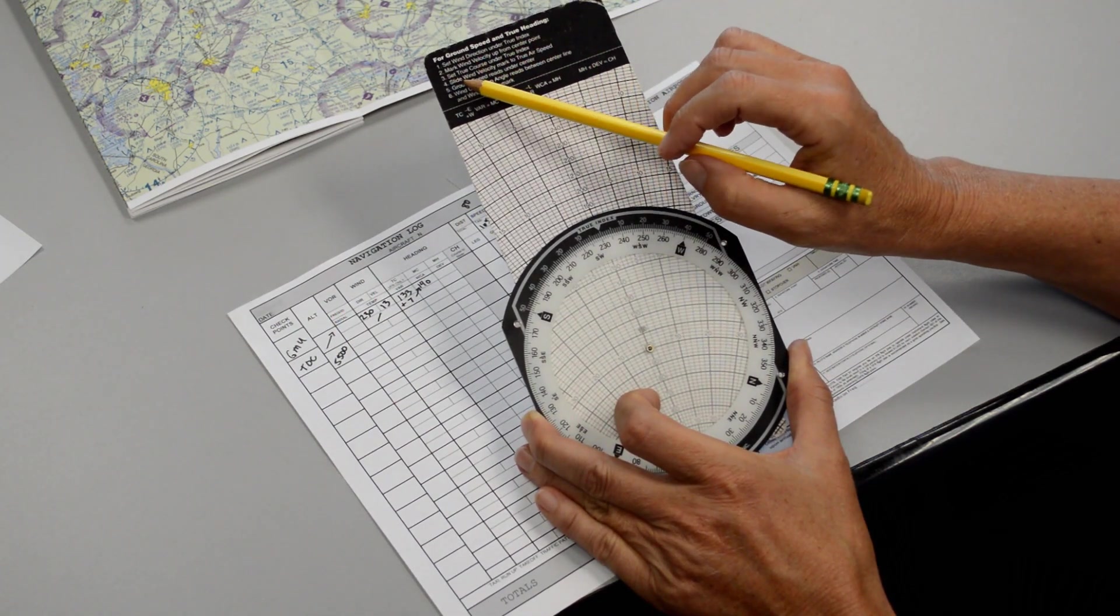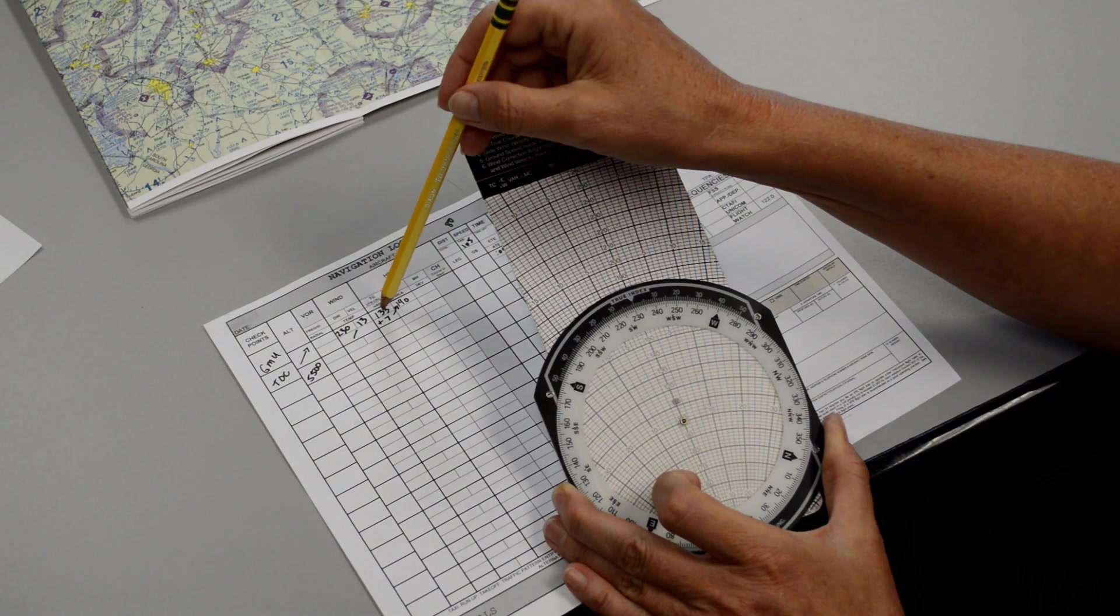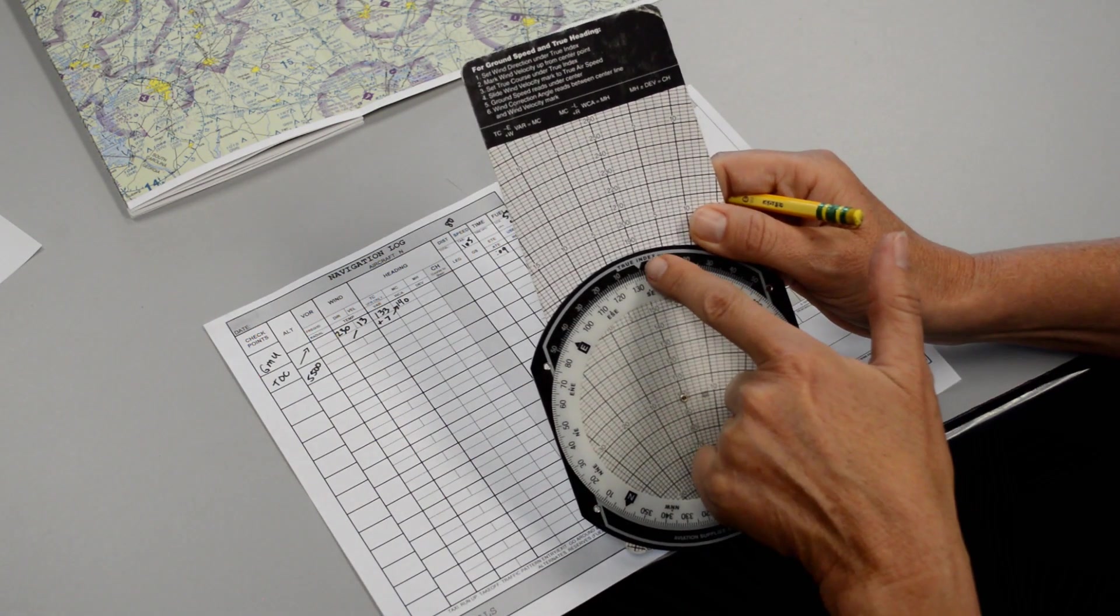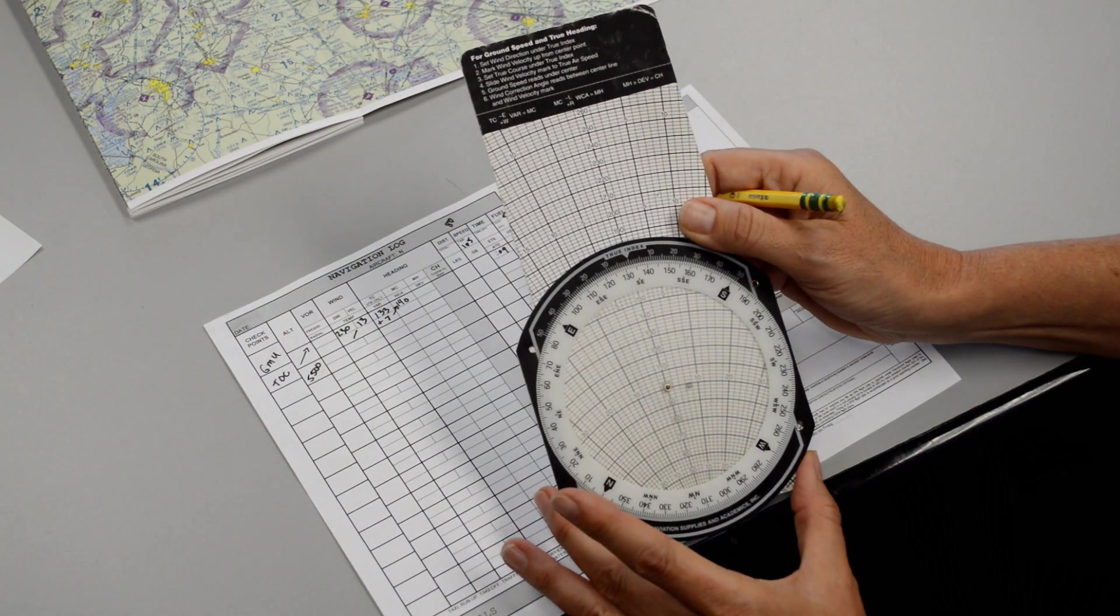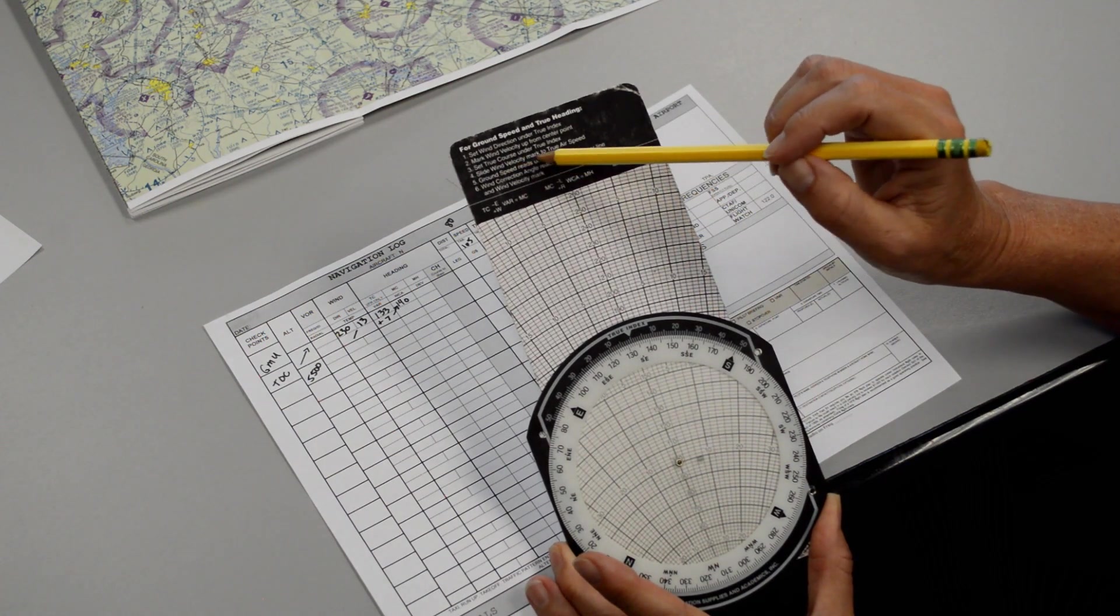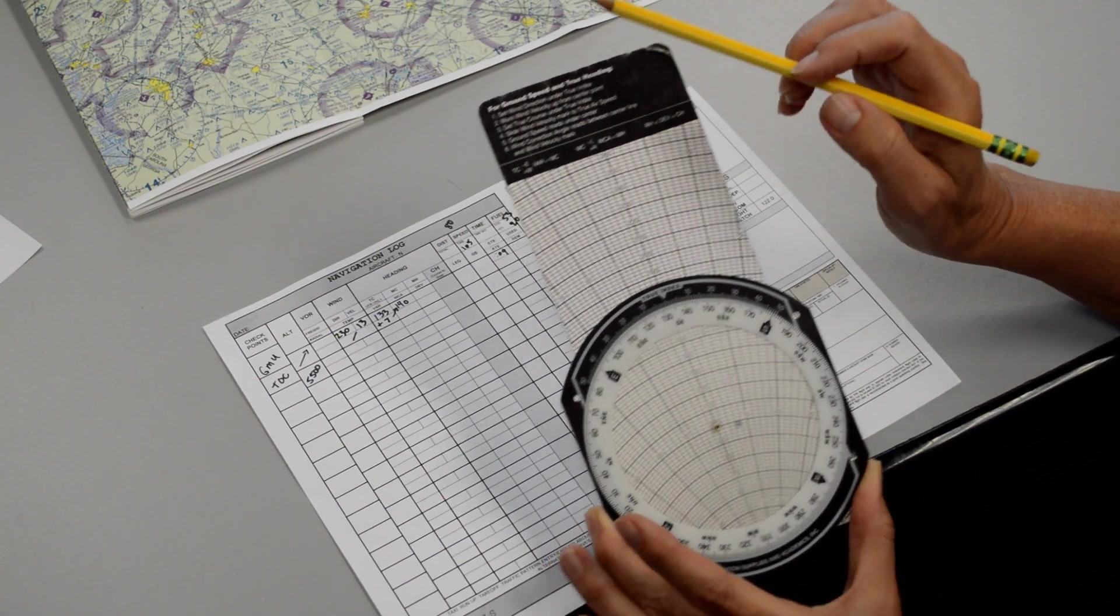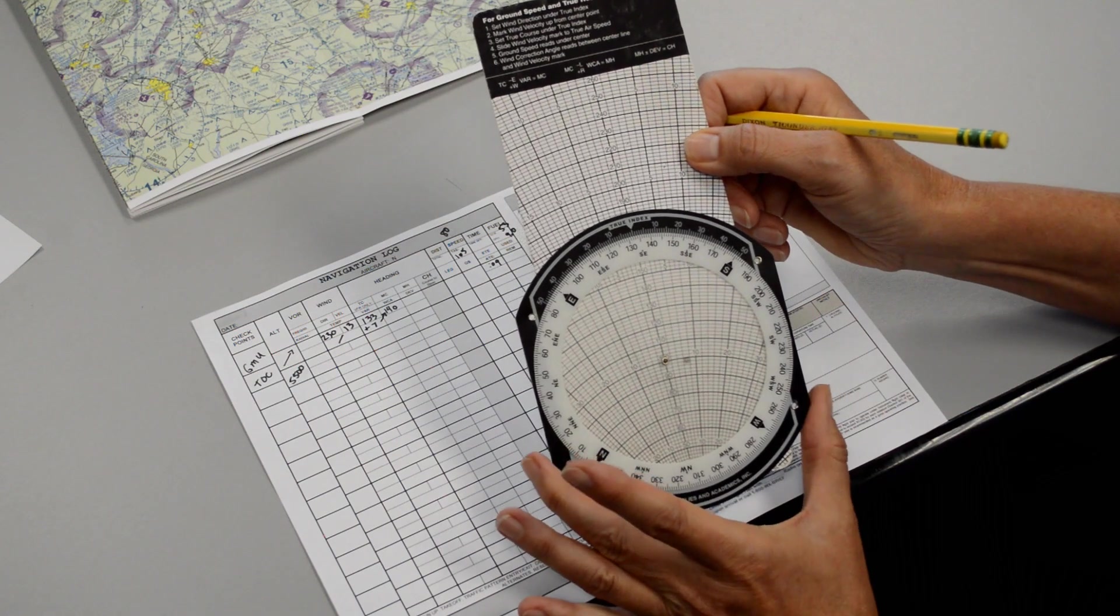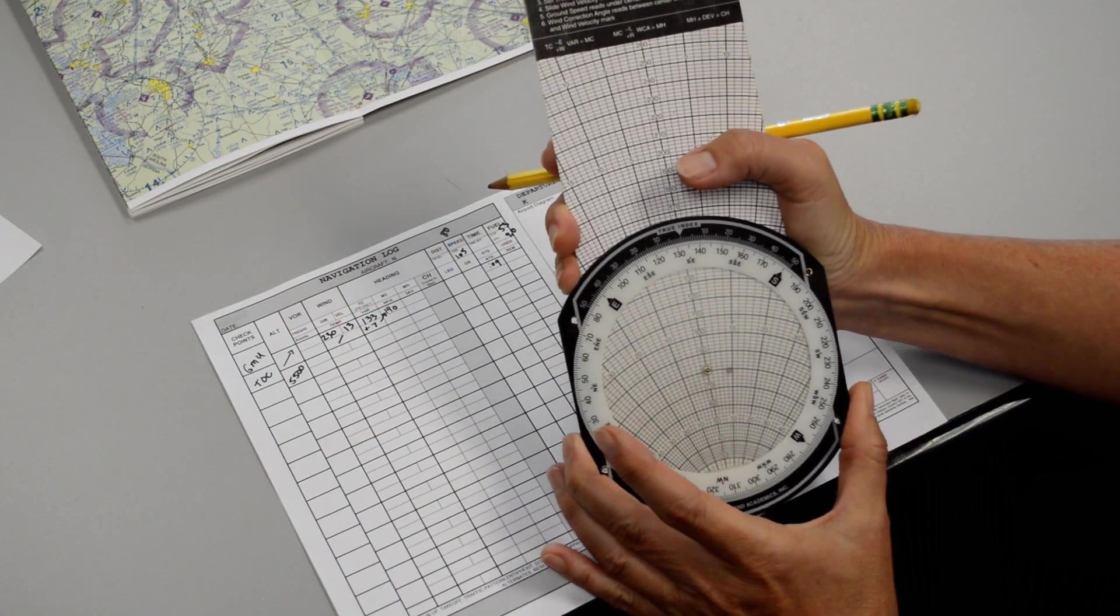Then step number three says to set true course under true index. Remember when we found our true course? It was 133. So now we just simply spin the wheel until 133 reads under the true index. Step 4 is a common step that people make errors with. So read it closely. It says slide the wind velocity mark, that means the mark you made with your pencil, slide the wind velocity mark to your true airspeed. Remember we wrote down 80 was our true airspeed for the climb. So we have to move the pencil mark to 80. So if I move this down to 80, then two bits of information are revealed.